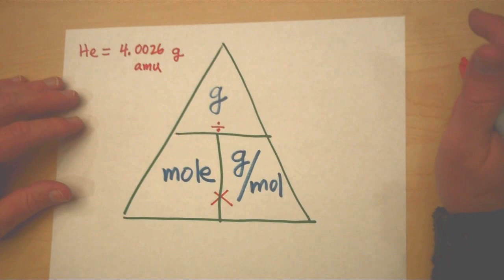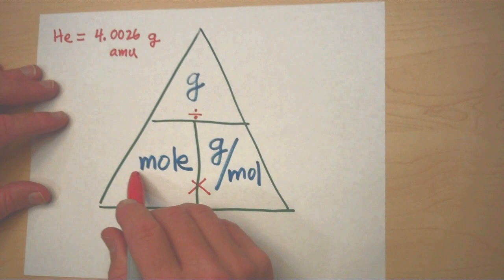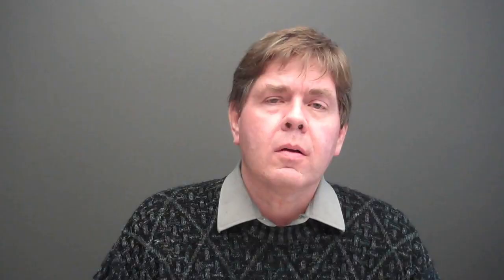To do this, we have to learn about the conversion triangle. This is your conversion triangle. How it works is that you have grams at the top, moles at the bottom left, and grams per mole, or grams in moles, at the bottom right. This represents divide and this line represents multiply. All right, let's go ahead and do a problem then with this.